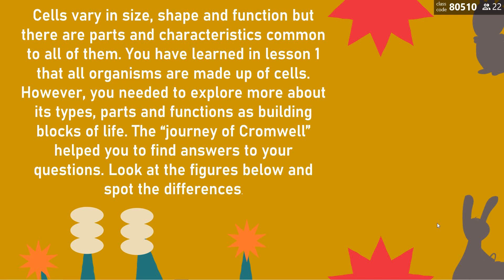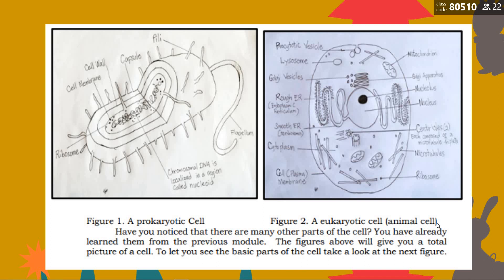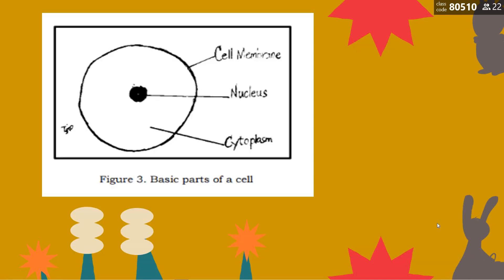Look at the figures below and spot the differences. Figure one is for prokaryotic, and figure two is for eukaryotic — that is the animal cell. You have already learned about the other cell parts in the previous module. The figures will give you a total picture of the cell to let you see the basic parts. These are the differences between prokaryotic and eukaryotic. The basic parts of the cell are: the cell membrane, the nucleus, and the cytoplasm.